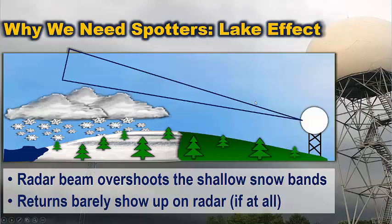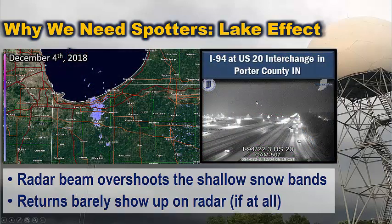This can also happen with lake effect. The radar beam often overshoots the shallow snow bands and the returns barely show up on radar, if at all. For example, we have that outer ring of the radar again near Chesterton and Valparaiso. There's some light reflectivity that might suggest light precipitation or maybe nothing reaching the ground at all. But as you can see on the actual webcam, I-94 at the US-20 interchange is seeing quite a bit of snow.